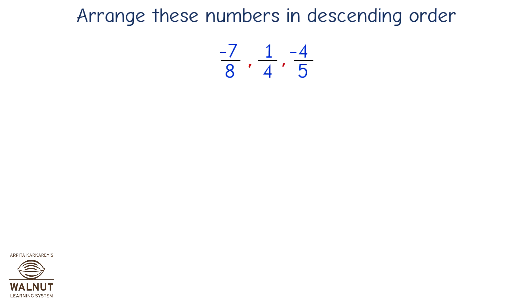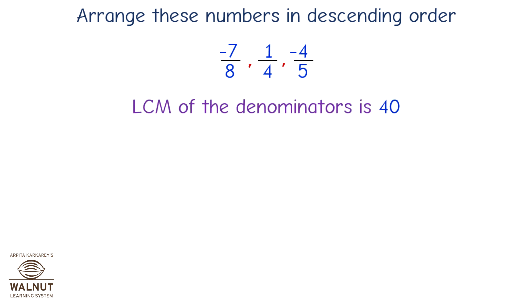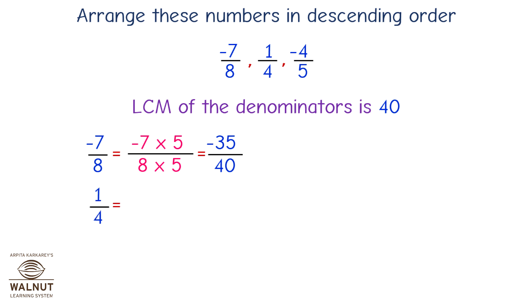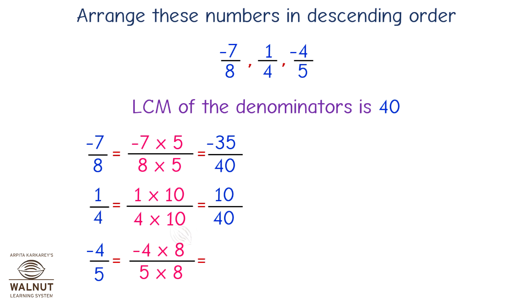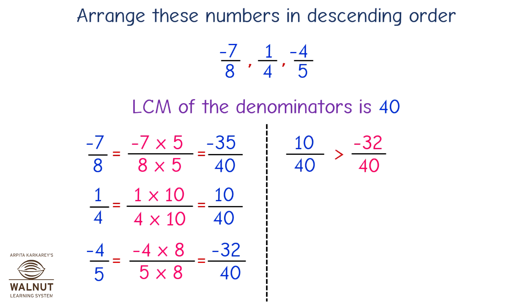Arrange these numbers in descending order: minus 7 upon 8, 1 upon 4, minus 4 upon 5. LCM of denominators is 40. Minus 7 upon 8 equals minus 35 upon 40. 1 upon 4 equals 10 upon 40. Minus 4 upon 5 equals minus 32 upon 40. So 10 upon 40 is greater than minus 32 upon 40 is greater than minus 35 upon 40. Therefore, 1 upon 4 is greater than minus 4 upon 5 is greater than minus 7 upon 8.